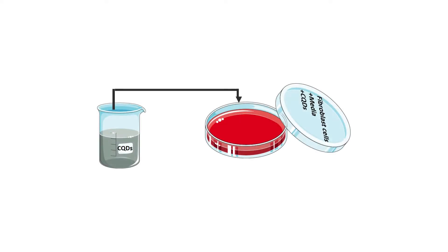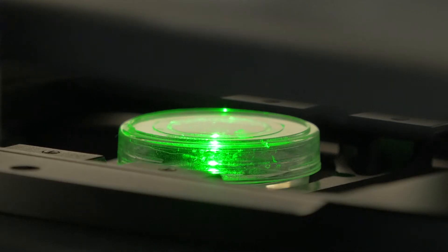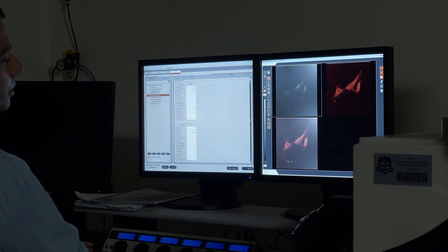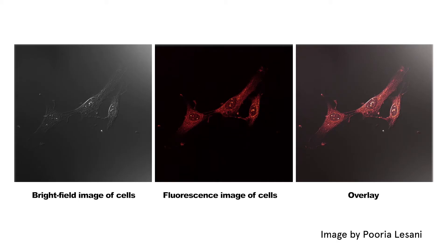Next, we add the carbon quantum dots to the cells' media and the cells will uptake them. I have put the new prepared dish on the microscope and adjusted the objective and laser on the sample. Wow, that's amazing! Now you can see the strong fluorescence of the cells after incubation with carbon quantum dots, which makes us able to see the details of the cells.